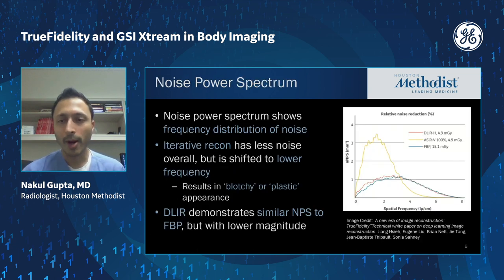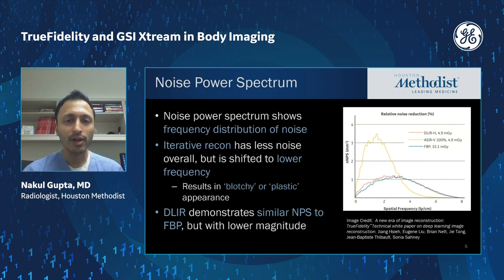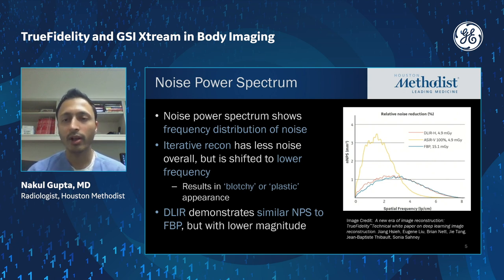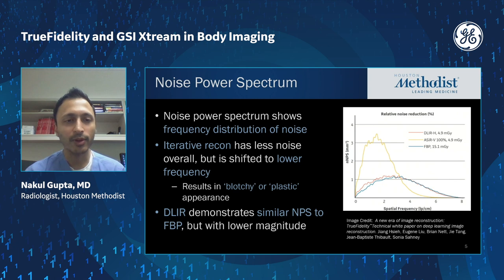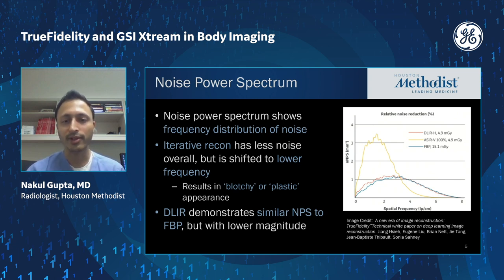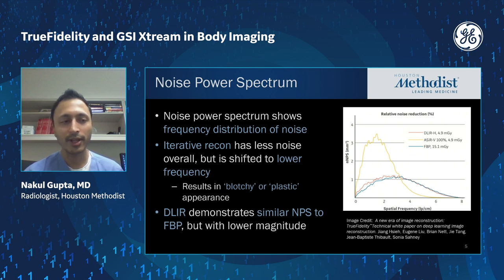One of the most important properties is the noise power spectrum, which is the frequency distribution of noise in your image. Iterative reconstruction techniques, while they may have lower noise overall, have a noise power spectrum shifted towards lower spatial frequencies — shown here in yellow — and that's what results in the blotchy or plasticky appearance of iterative reconstruction images. DLIR, by contrast, has a noise power spectrum very similar to FBP, which gives it that more natural texture.